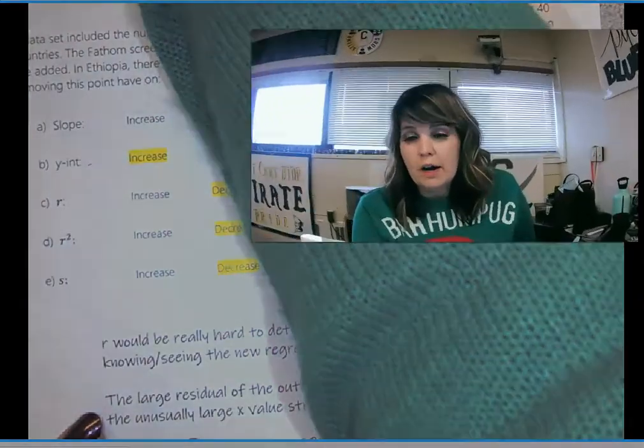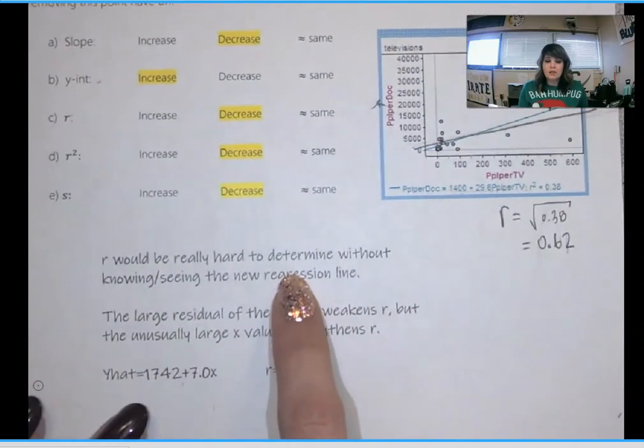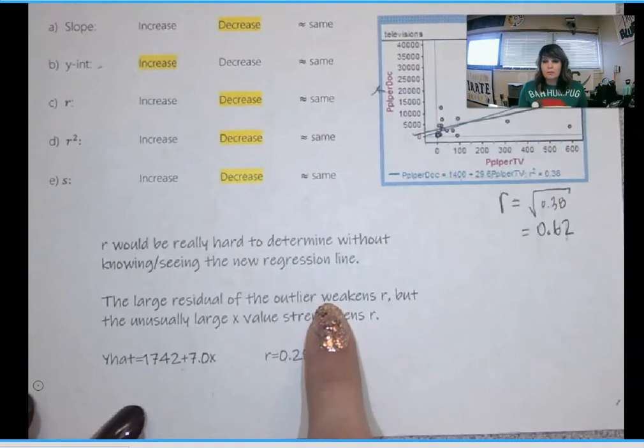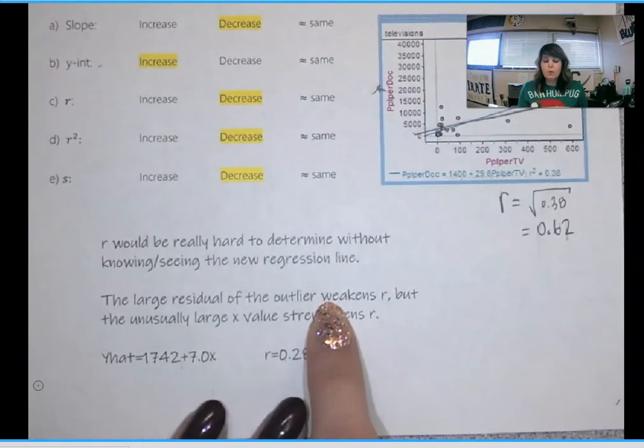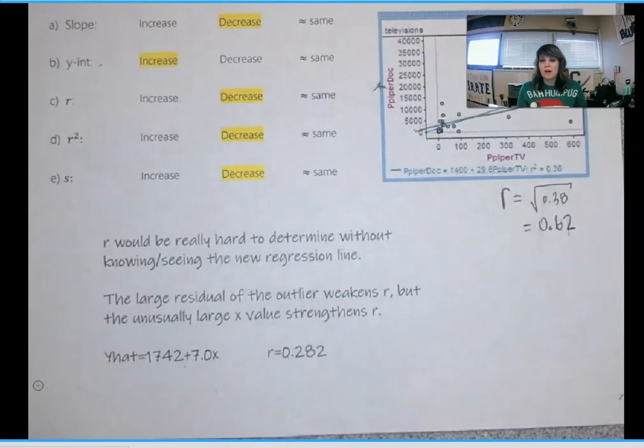This is a really good spot for me to reiterate. Influential points, sometimes it's hard for things to be black and white, just like I'm saying on this problem that I just talked about. I would have a really hard time knowing what happened to r and r squared. And if I got that on a free response problem, I would say that. I would say exactly what I have written here on my paper. r would be really hard to determine without knowing or seeing the new regression line because one of the things about the influential point weakens r and the other thing strengthens r. And I don't know what the overall effect would be. I would just write that.